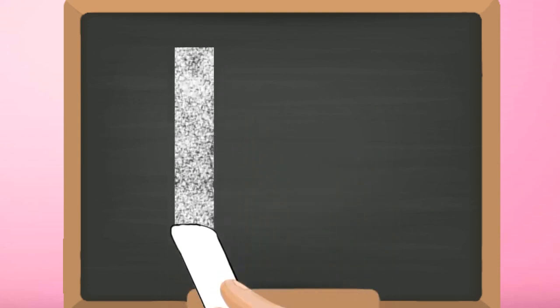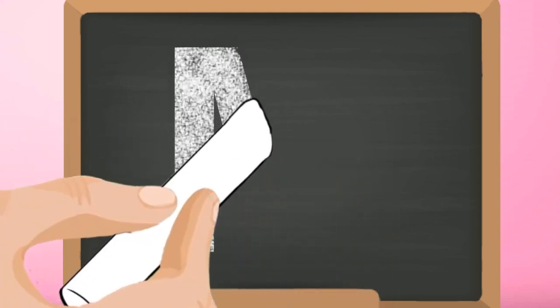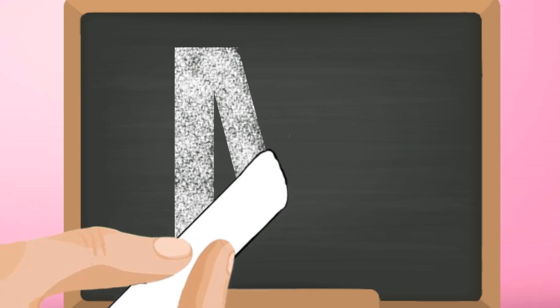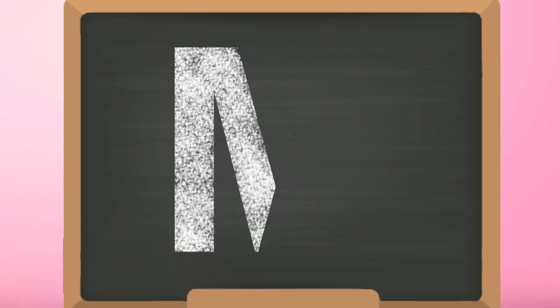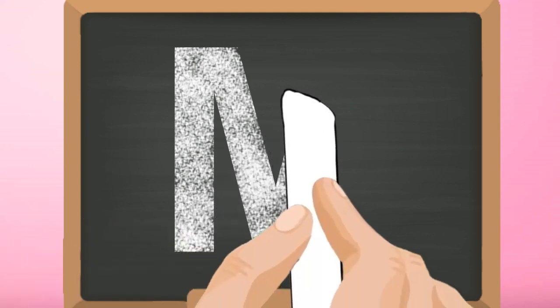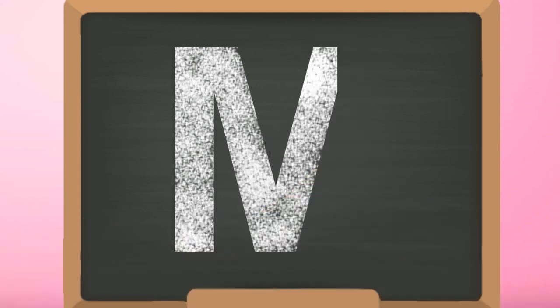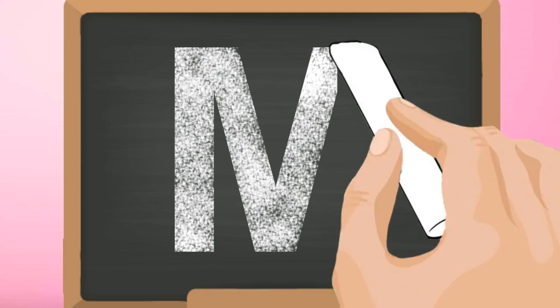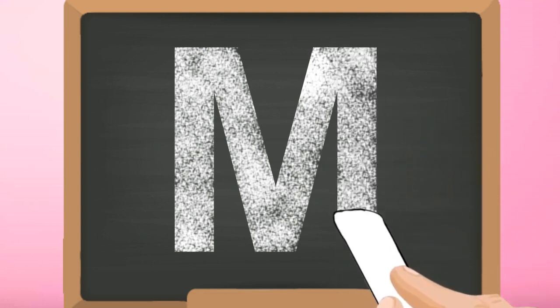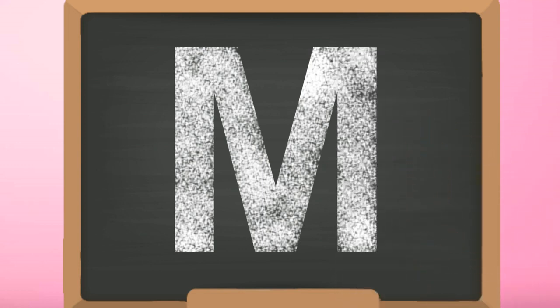Start from the top and draw a standing line down. Go back to the top and draw a slanting line down to the right and another slanting line up to the top. Now draw a standing line to the bottom.